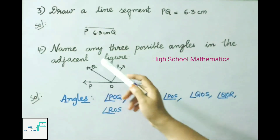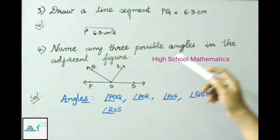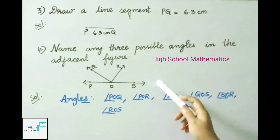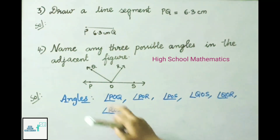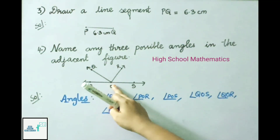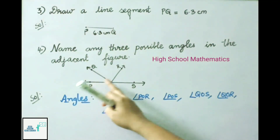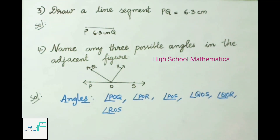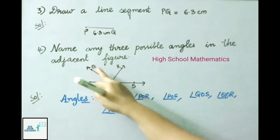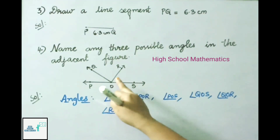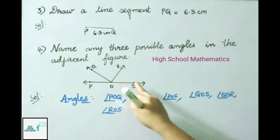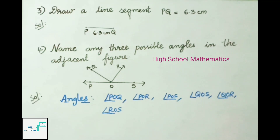Question 4: Name any three possible angles in the adjacent figure. The angles are angle POQ, angle POR, angle POS (which is a straight angle), angle QOS, angle ROS, and angle QOR. We can take any three angles from these.